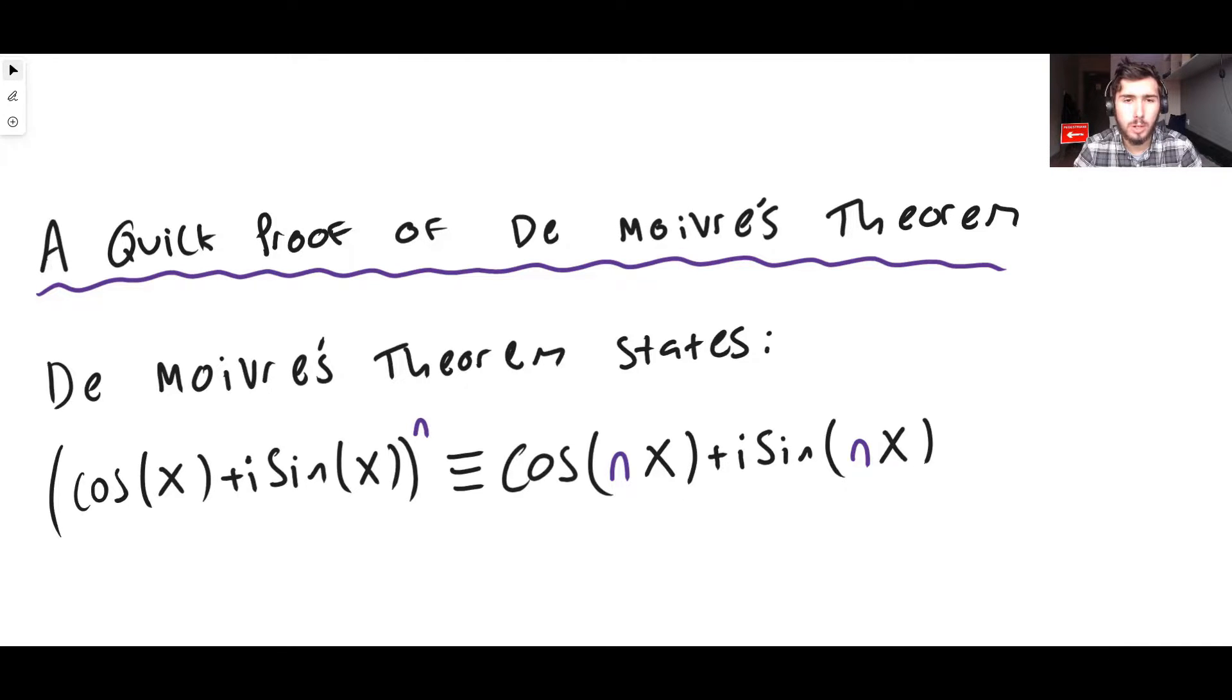Not a thorough proof, there's not going to be a really thorough proof. You can prove it somewhat thoroughly, you can prove it for all natural numbers using induction and potentially we'll do that in the future. But for now this is going to be a quick video proving De Moivre's theorem.